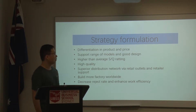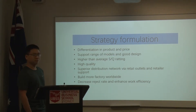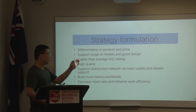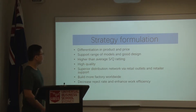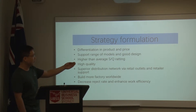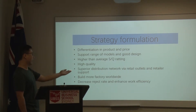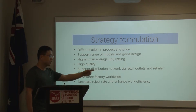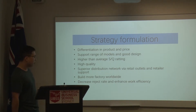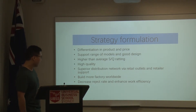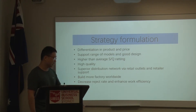Then I will introduce our company's strategy formulation. Our company, ENike, used the differentiation business strategy — differentiation in product and price. That includes supporting a range of models with good design, a higher than average industry SQ rating, providing high-quality products to the customer. We also built a superior distribution network with our retail outlets and retailers' support. We also built more factories worldwide depending on customer requirements, and paid attention to decreasing the rejection rate and enhancing work efficiency.